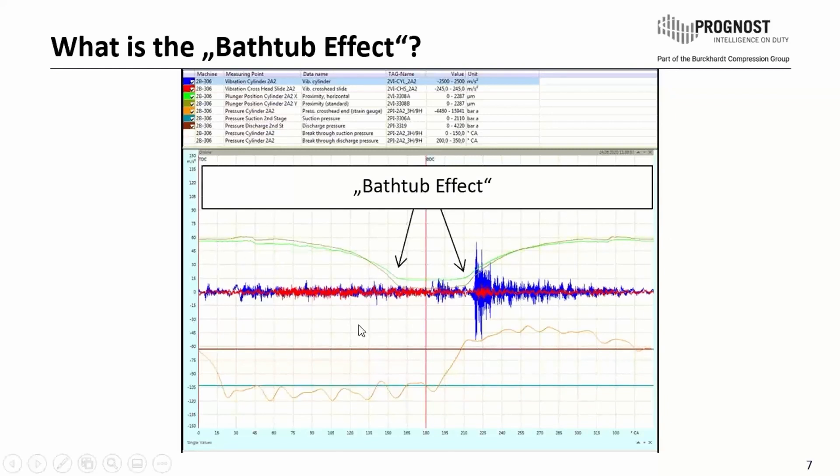We see also cylinder vibration, crosshead vibration, and dynamic pressure. But important is these signals from the proximity sensor, here it's green and brown.